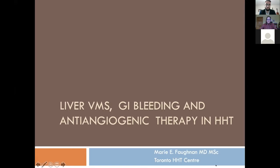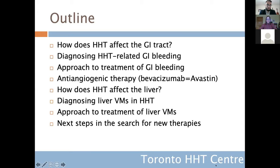There are three topics. First, I'm going to talk about how HHT affects the GI tract or the digestive tract, and then specifically how to diagnose HHT-related chronic bleeding from the GI tract. Next, I'll talk about the approach to treatment for GI bleeding in HHT. And then specifically, I'll introduce the concept of anti-angiogenic therapy.